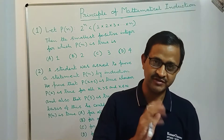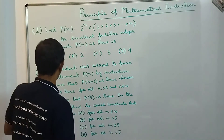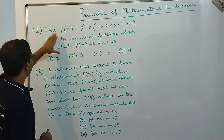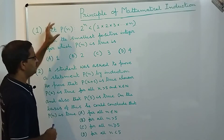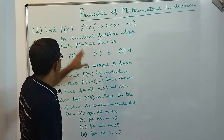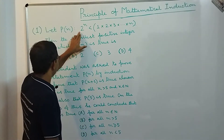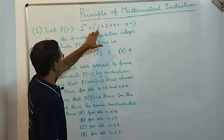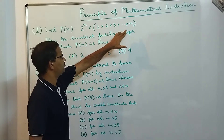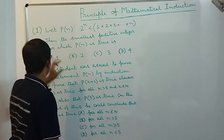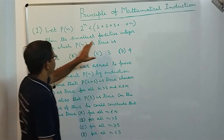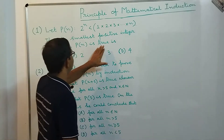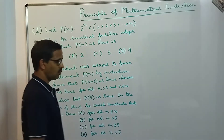The first question is: let P(n) be the mathematical statement that represents 2^n < 1·2·3·...·n. Then the smallest positive integer for which P(n) is true is what?